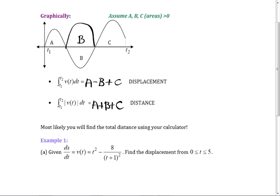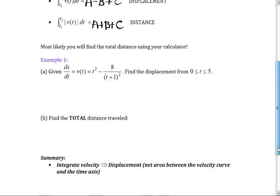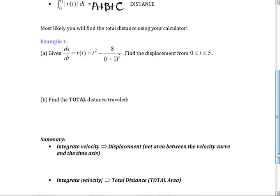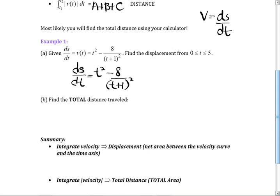We're going to start with differential equations and find the displacement. How do you find the displacement if you're given the velocity? Velocity equals dS/dt — that's a differential equation. To find displacement, integrate that from zero to five.